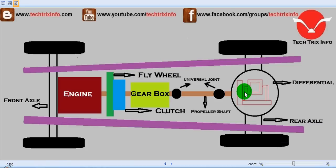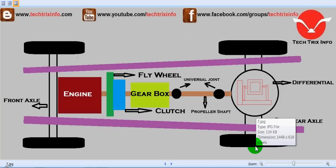At the rear axle we have the differential, which takes power from the gearbox and helps the rear axle adjust the required amount of torque supplied to the right-hand side and left-hand side wheels, so the vehicle can have smooth mobility when selecting different gears or when taking a turn or curve.